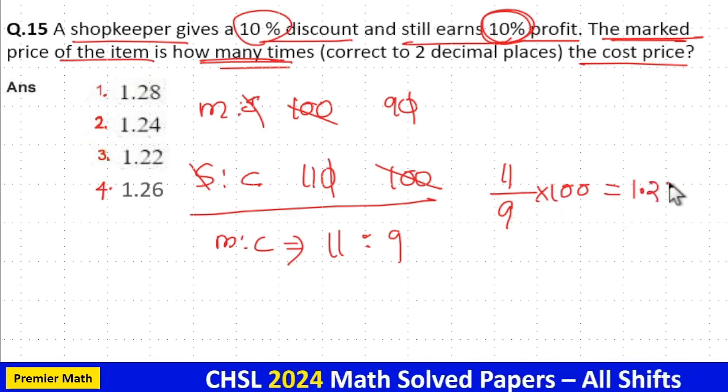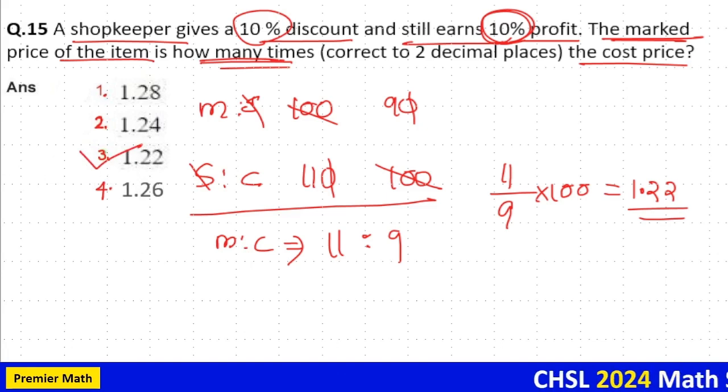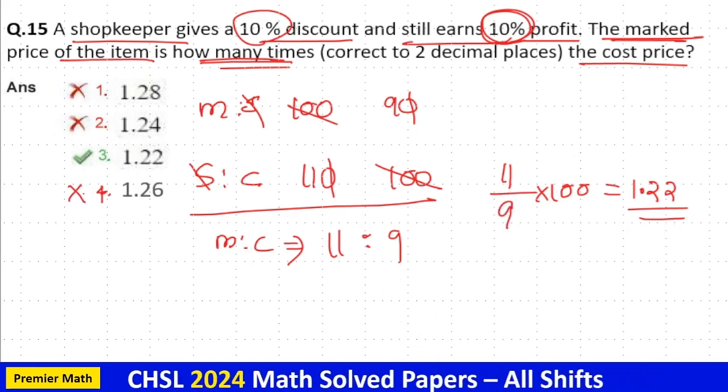So option 3 is your answer: 1.22 times. Mark price is 1.22 times the cost price.